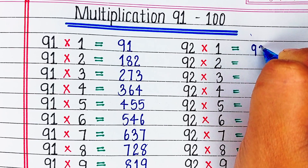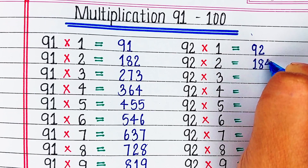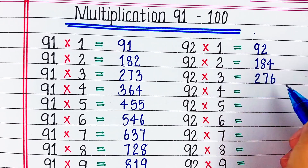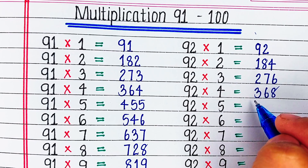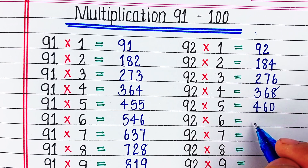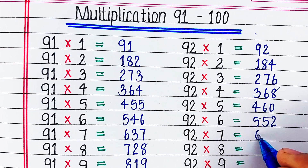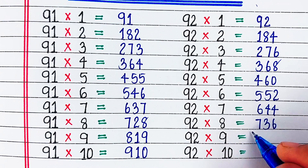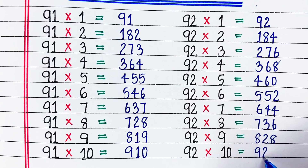Next is table of 92. 92 ones are 92. 92 twos are 184. 92 threes are 276. 92 fours are 368. 92 fives are 460. 92 sixes are 552. 92 sevens are 644. 92 eights are 736. 92 nines are 828. 92 tens are 920.